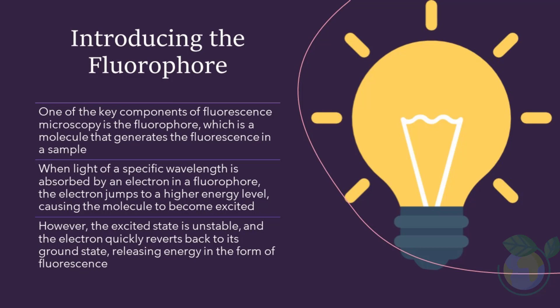However, the excited state is unstable, and the electron quickly reverts back to its ground state, releasing energy in the form of fluorescence. This process is known as emission. The emitted photon has a longer wavelength and lower energy than the photon that excited the fluorophore. This process occurs in nanoseconds.